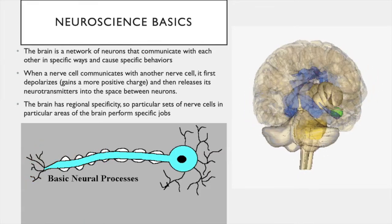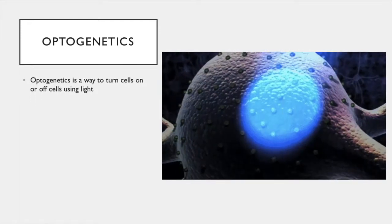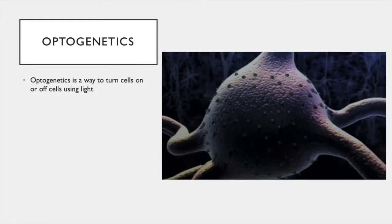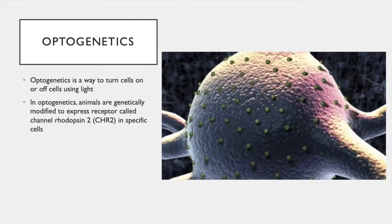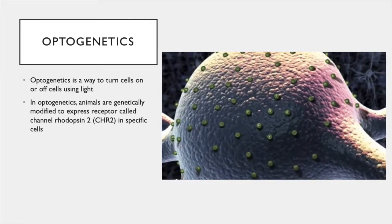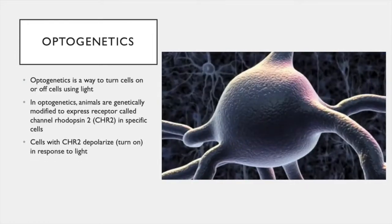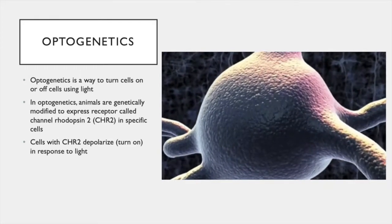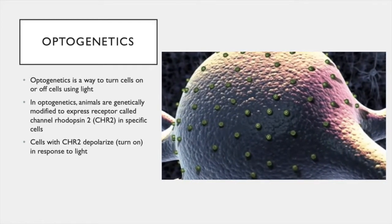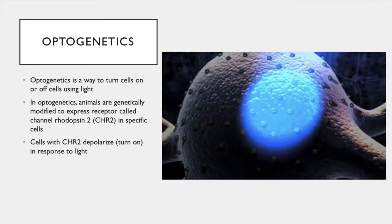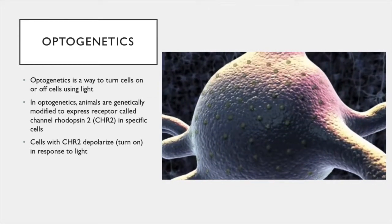These are just a few of the many brain regions in the brain. Now I'm going to talk about optogenetics. Optogenetics is a way to turn cells on and off using light. In optogenetics, animals are genetically modified to express a protein called channelrhodopsin-2 in specific cells. Cells expressing channelrhodopsin depolarize — or in other words, turn on — in response to light. In the animation on the right, you can see the channelrhodopsin proteins all over the cell body. When light hits the cell, channelrhodopsin opens and causes the cell to depolarize.